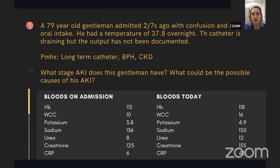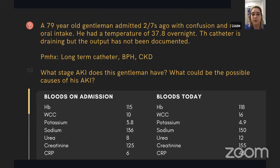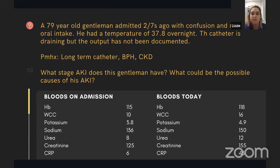You are the F1 on call and you've been called to see a 79-year-old gentleman who's been in for a couple of days with confusion and reduced oral intake. Overnight there was a one-off temperature of 37.8, but otherwise his observations are fine. The catheter in situ was from admission — nurses say it's been draining but the output hasn't been documented. Past medical history includes a long-term catheter, benign prostatic hyperplasia, and background CKD. His bloods from admission two days ago show a creatinine of 125, and today's creatinine is 155. What stage AKI and what causes could be contributing?